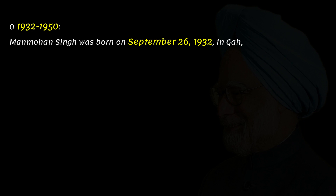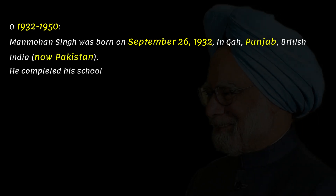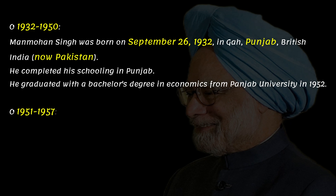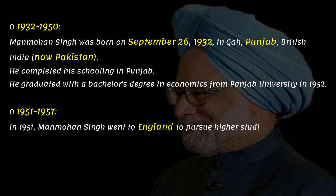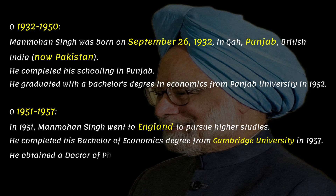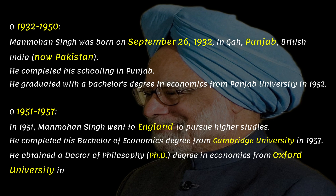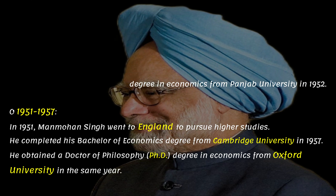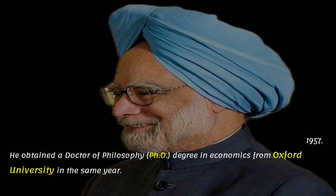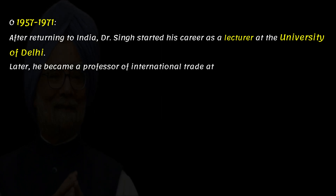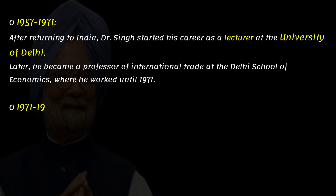Manmohan Singh was born on September 26, 1932, in Gha, Punjab, British India, and completed his schooling in Punjab. He graduated with a bachelor's degree in economics from Punjab University in 1952. In 1951, he went to England to pursue higher studies, completing his bachelor of economics degree from Cambridge University in 1957 and a Doctor of Philosophy degree in economics from Oxford University. After returning to India, Dr. Singh started his career as a lecturer at the University of Delhi, later becoming a professor of international trade at the Delhi School of Economics, where he worked until 1971.